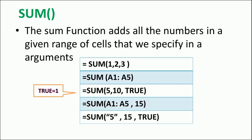The first function is SUM. As the name tells, it performs addition - it adds all the numbers in the given range of cells specified in the argument. For example, =SUM(1,2,3) gives 6. And =SUM(A1:A5) adds the values in cells A1 through A5.